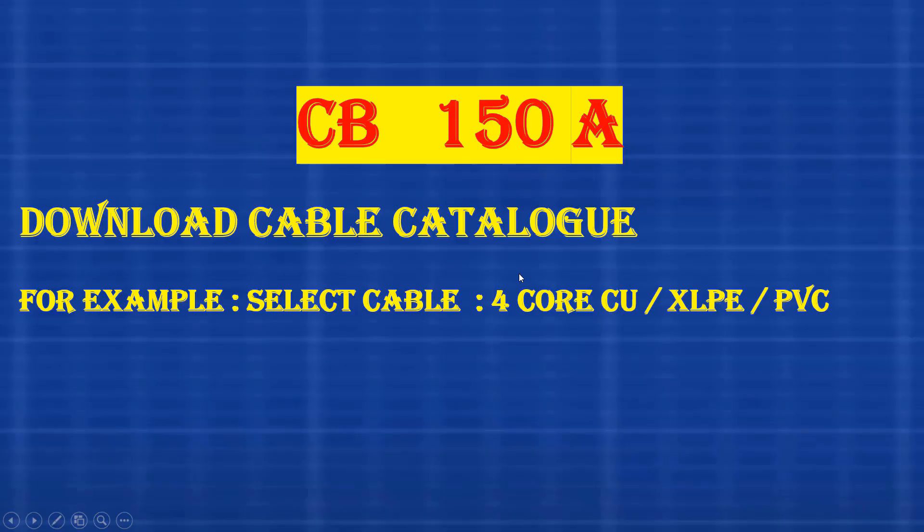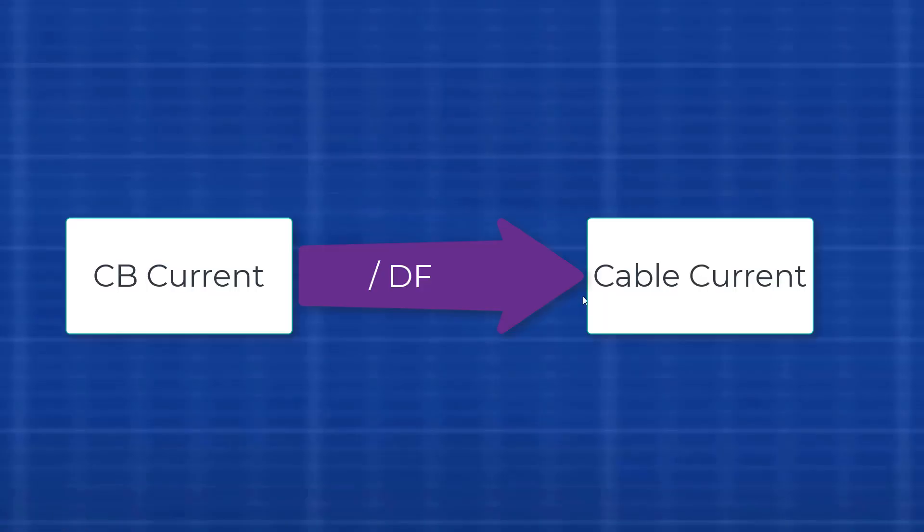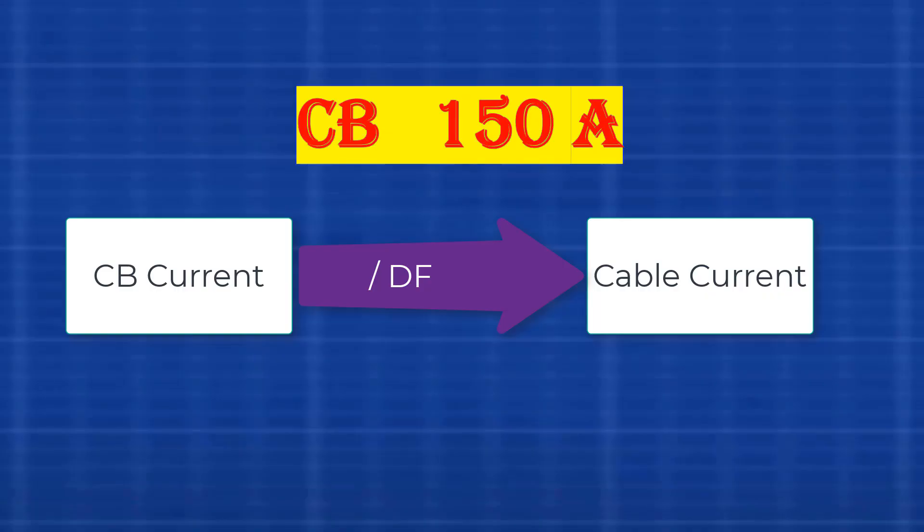But before we go to the catalog, there is an important point to understand. We calculate the cable current based on the circuit breaker current divided by the total derating factor. By applying the formula, we get cable current equals circuit breaker current divided by total derating factor.